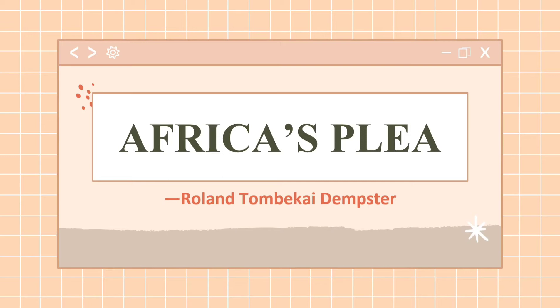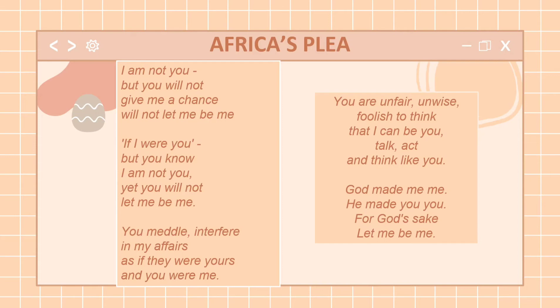Now we will be analyzing one of Africa's literary pieces. The title of this poem is 'Africa's Plea' by Roland Tombikai Dempster. I will read the poem to you. 'I am not you, but you will not give me a chance, will not let me be me. If I were you — but you know I am not you — yet you will not let me be me. You meddle, interfere in my affairs as if they were yours and you were me. You are unfair, unwise, foolish to think that I can be you, talk, act, and think like you. God made me me, he made you you. For God's sake, let me be me.'